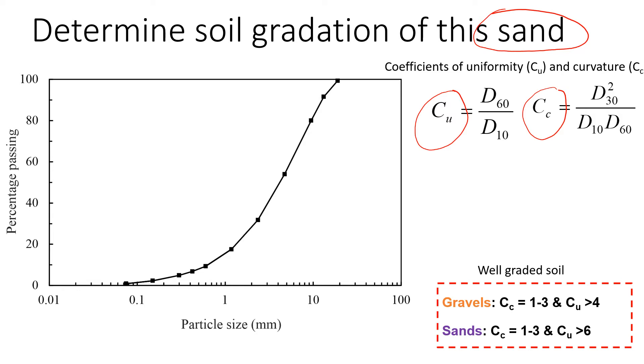To do that, we need to look at the curve and see the size of particles that are finer than 10%, so this will give you D10, 30% D30, and 60% D60. We need to estimate the size of the particle. We'll see that this one goes here and the size will be about 0.6 millimeters. So I'm going to write down here that D10 is 0.6 millimeters.